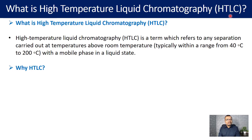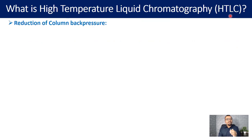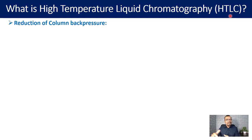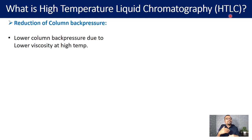Why is HTLC important and why must you consider it for your next experimentation? First and foremost, HTLC will help you to reduce the column back pressure. We all know that column back pressure is the limiting factor for HPLC analysis, and that is the reason there is UPLC or UHPLC. In case you are working with very high viscosity organic solvents like IPA or methanol, higher temperature will help you to reduce the viscosity of those organic solvents and you will get lower column back pressure. This increased temperature will also help you to increase the flow rate of your mobile phase.